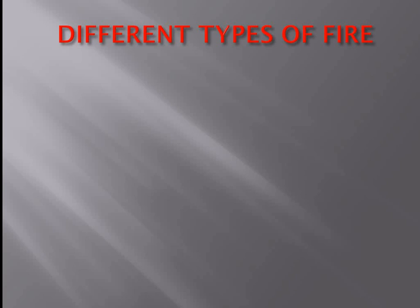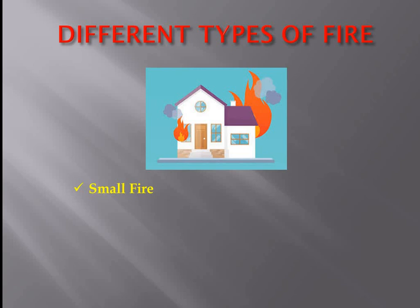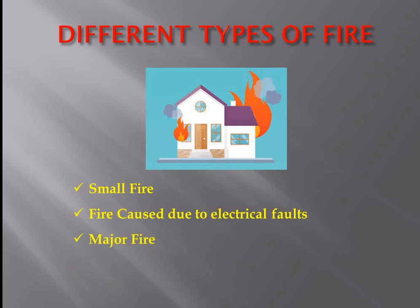Now we have learned about the hazards and causes of fire. In this slide, we will learn about what are the different types of fire: first, small fire; second, fire caused due to electrical faults; third, major fire; and fourth, when a person's clothes catch fire. According to these types of fire, we will learn what preventive measures to take to put out each type of fire.